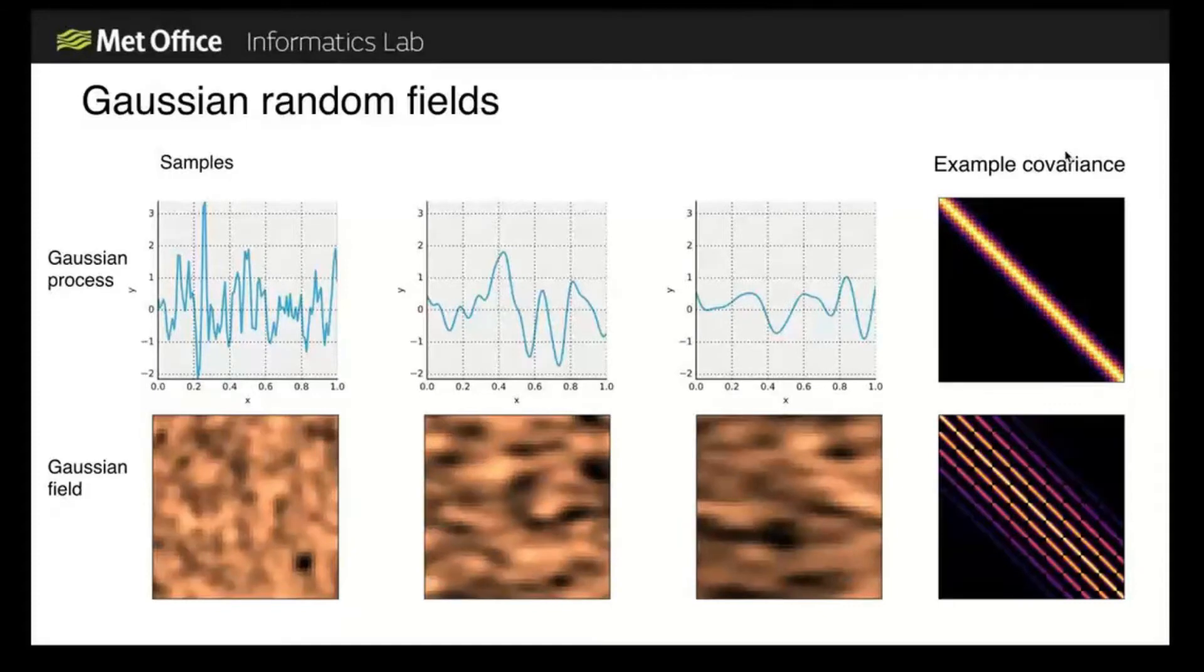On the left, it would fall away very quickly, so it would be quite a narrow peak, whereas on the right, a much smoother field described by a longer length scale.